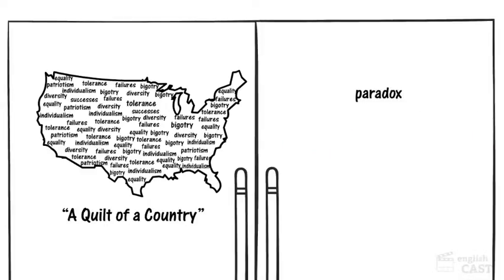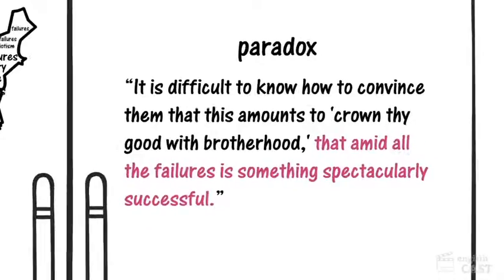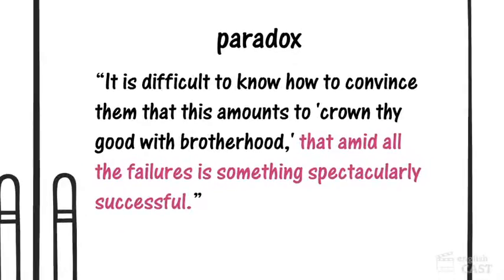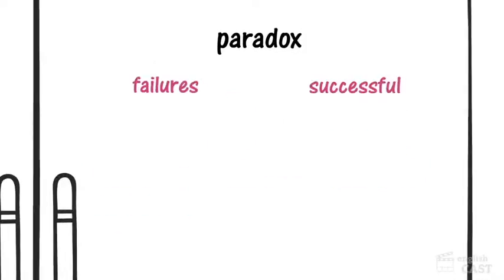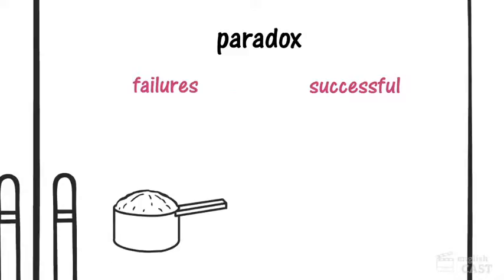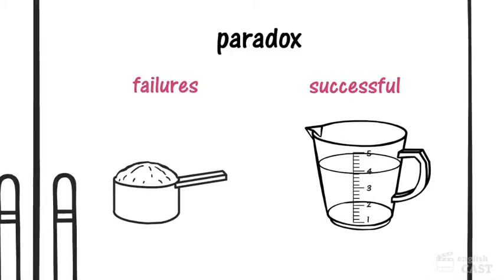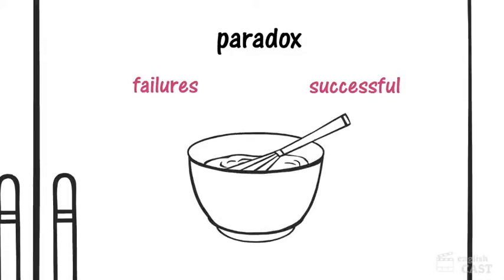Paradox is another rhetorical device that combines opposites. In a paradox, the opposites work together to create a new idea. Quinlan writes that amid all the failures is something spectacularly successful. Failure and success are opposites. In a paradox, they're kind of like dry flour and wet water — together, these two opposites create something new.